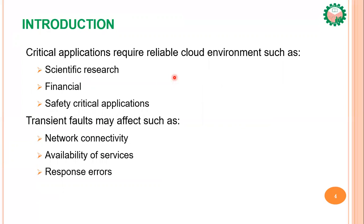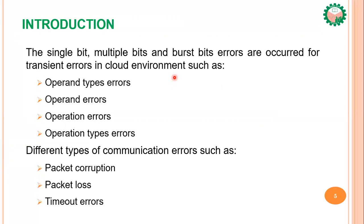Critical applications require reliable cloud environments, such as scientific, financial, and safety-critical applications. Transient faults may occur such as network connectivity issues, availability of services, and response errors. Single bit, multiple bits, and burst bit errors occur for transient errors in cloud environments. Different types of communication errors include packet corruption, packet loss, and timer errors.